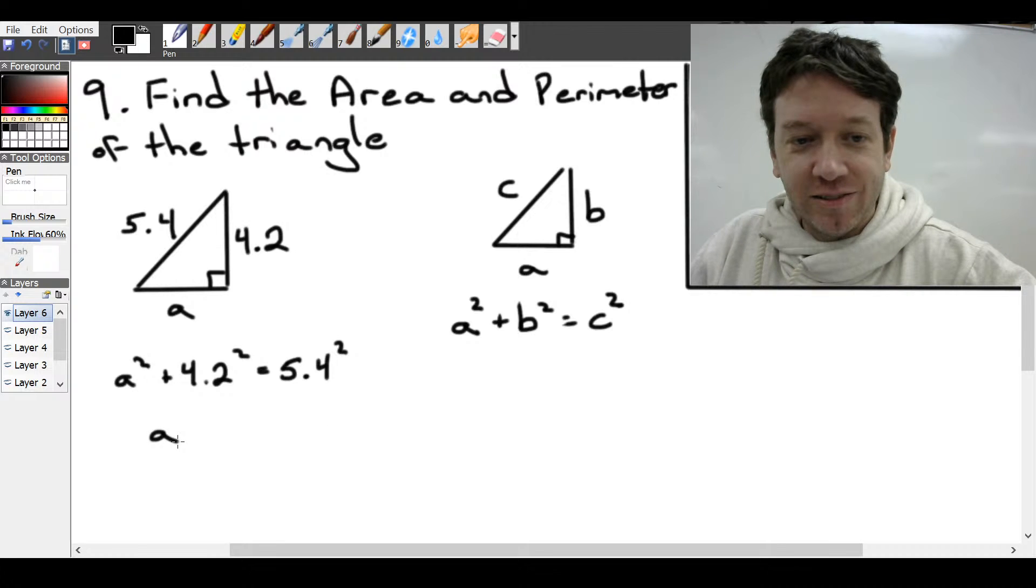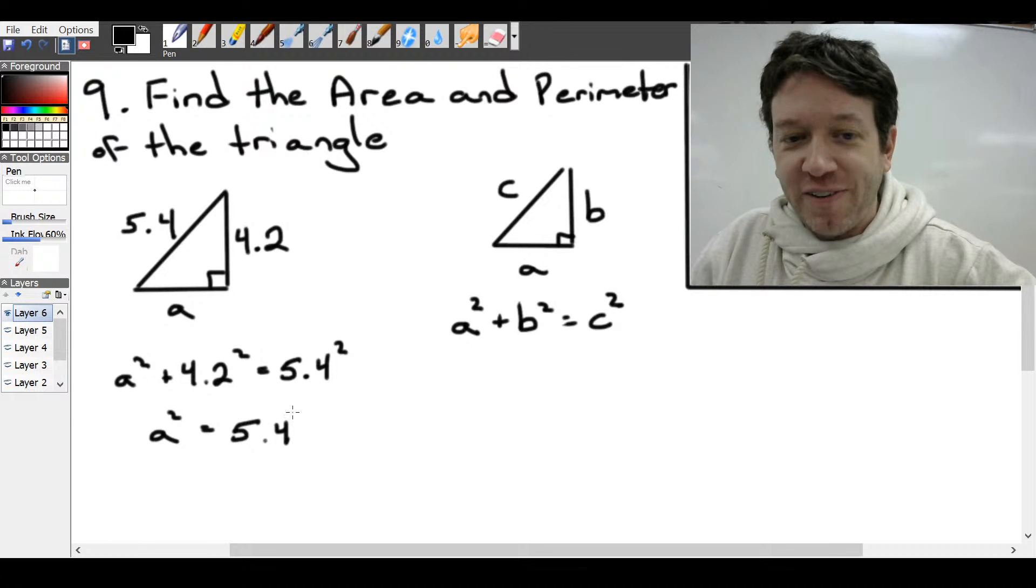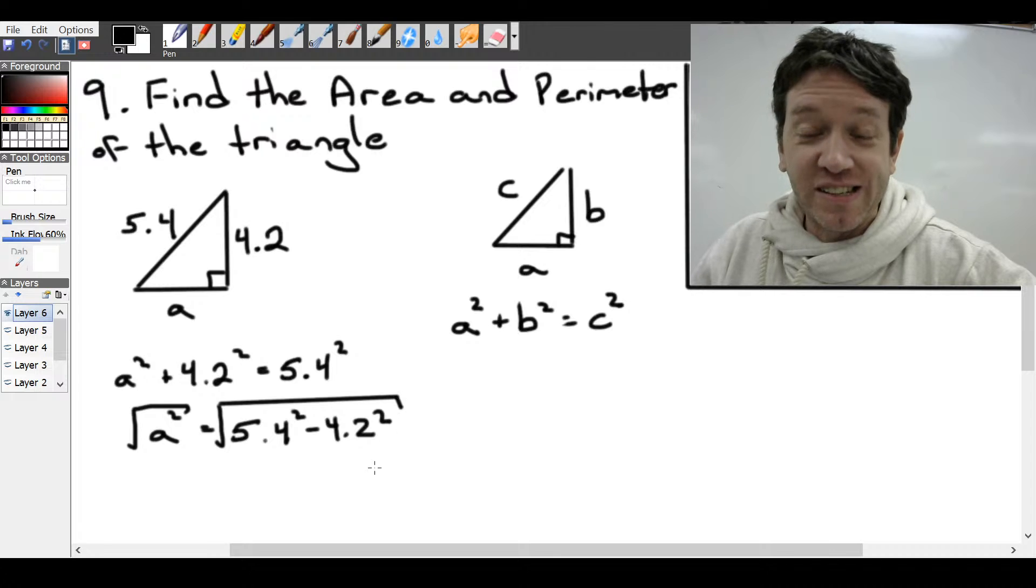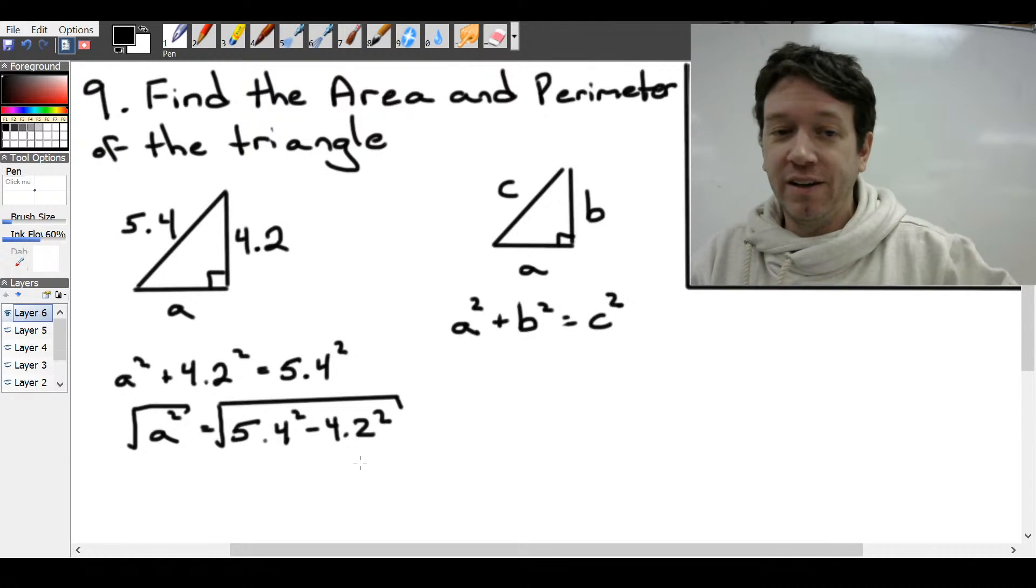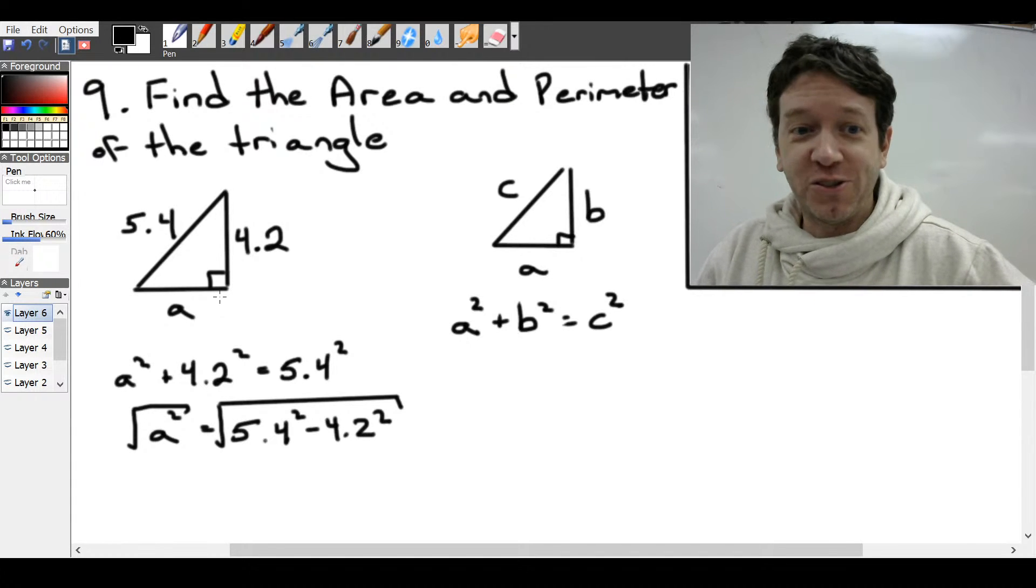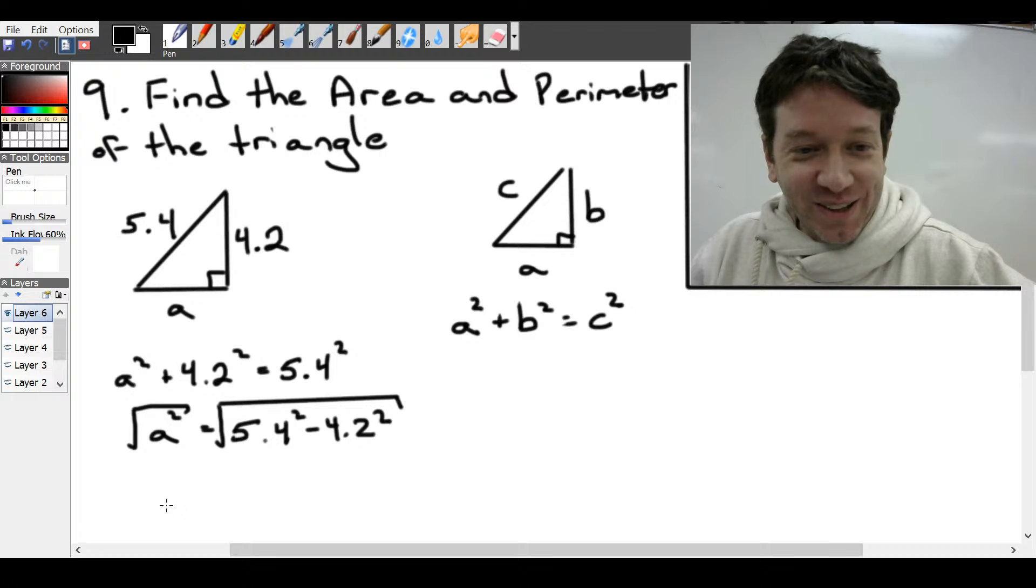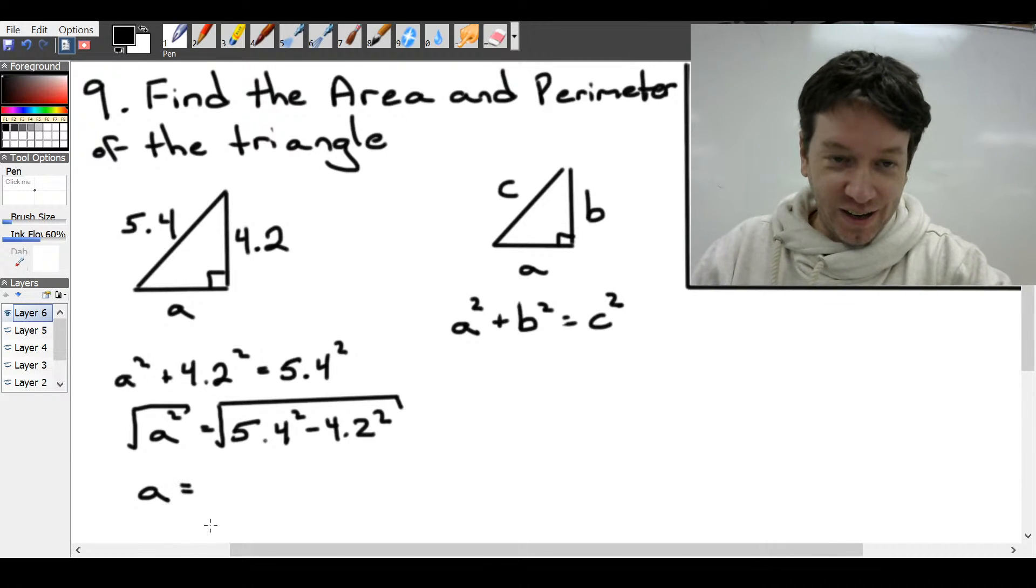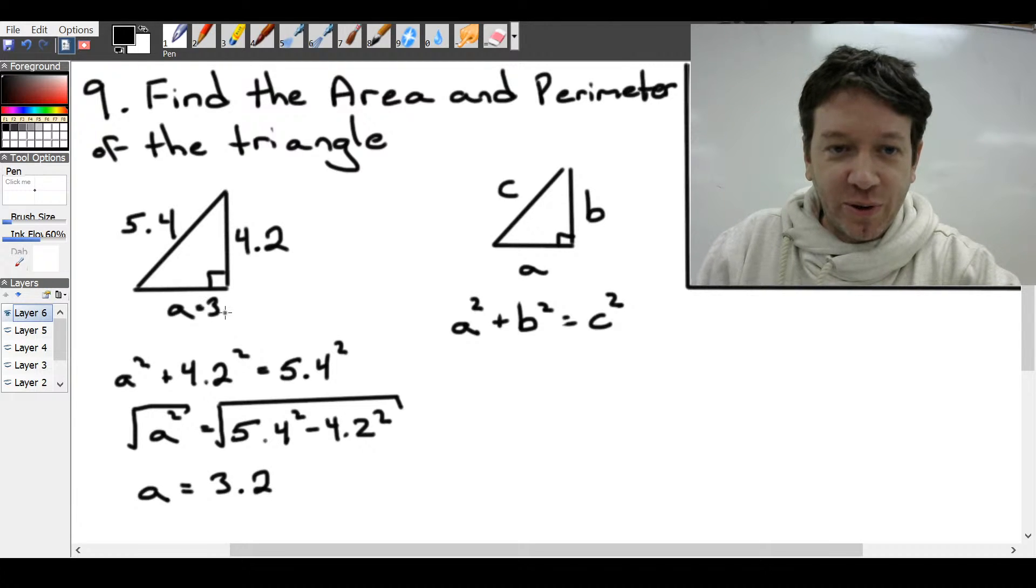So to find a, we can subtract 4.2 squared from both sides of the equation. So we got 5.4 squared minus 4.2 squared. And then to figure out what a is, we take the square root of both sides. Make sure you do this. Otherwise, you're not solving for a, you're solving for a squared, right? Which wouldn't be the length of that side, it would be the area of a square with length of that side. So take the square root of both sides, we plug that into our calculators, and we'll get 3.2. So we know this is 3.2.